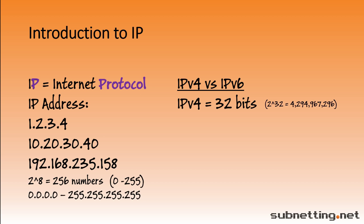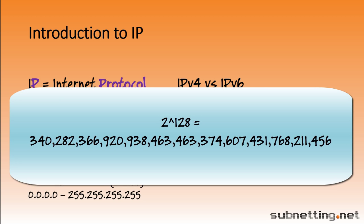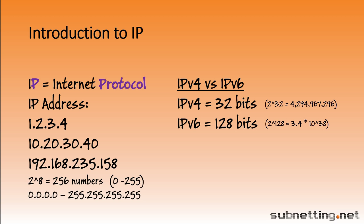Two to the 32nd power is over four billion — that's the total number of IP addresses you can have with IPv4. Four billion may sound like a lot, but with over seven billion people on Earth and lots of servers, workstations, laptops, tablets, cell phones, routers, switches, and even cars that are on the internet, we're running out of IPv4 addresses. With IPv6, there are four times as many bits, or 128, but that's a lot more than four times as many addresses. Two to the 128th power is astronomically large — approximately 3.4 times 10 to the 38th, or three with 38 zeros on the end. That number is so big that the Earth will be swallowed up by the sun before we run out of IPv6 addresses.